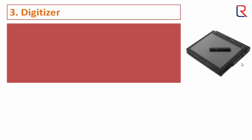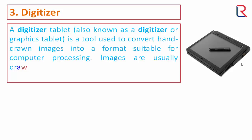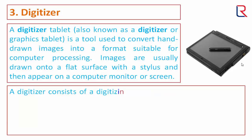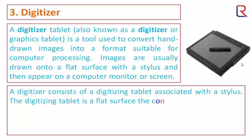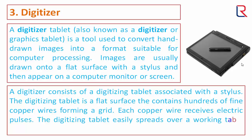Digitizer: a digitizer tablet is a tool to convert hand-drawn images into a format suitable for computer processing. Images are usually drawn onto a flat surface with a stylus and then appear on a computer monitor. The digitizer consists of a digitizing tablet associated with a stylus. The digitizing tablet is a flat surface that contains hundreds of fine copper wires forming a grid; each copper wire receives an electronic pulse. The digitizing tablet spreads over a working table and connects to the computer.